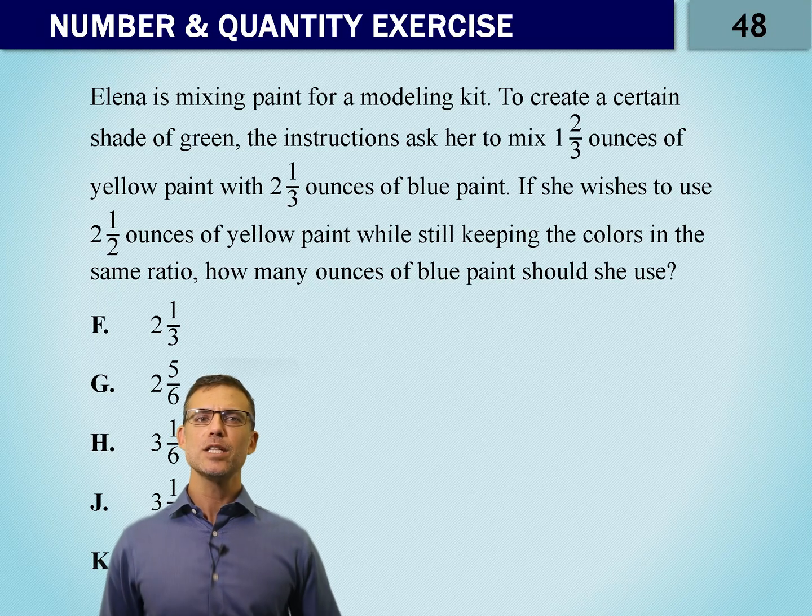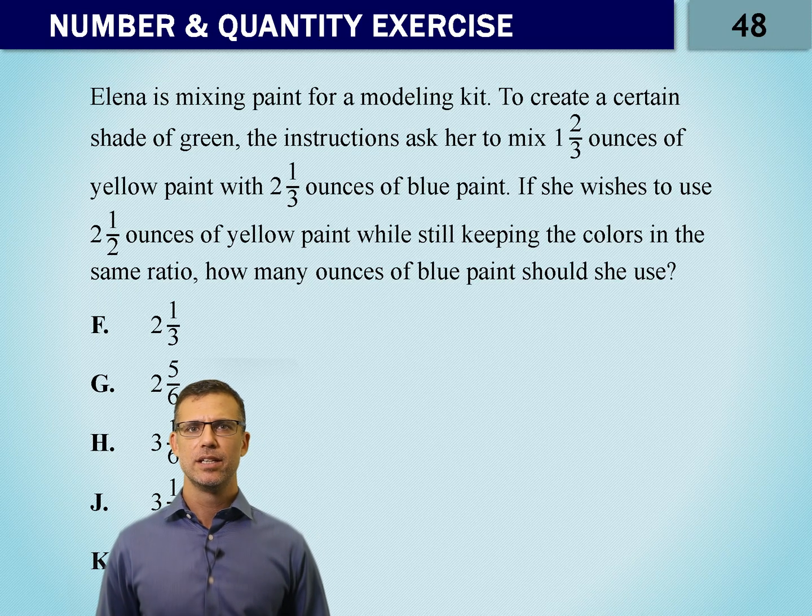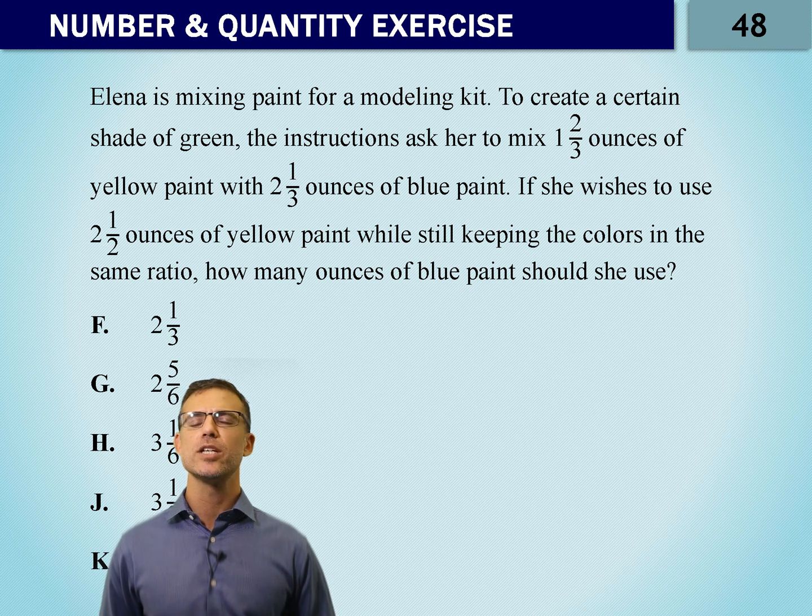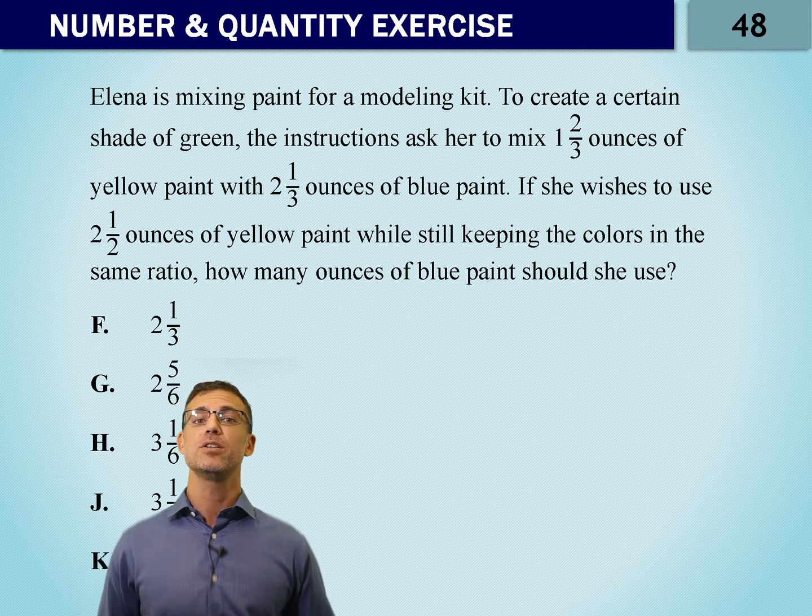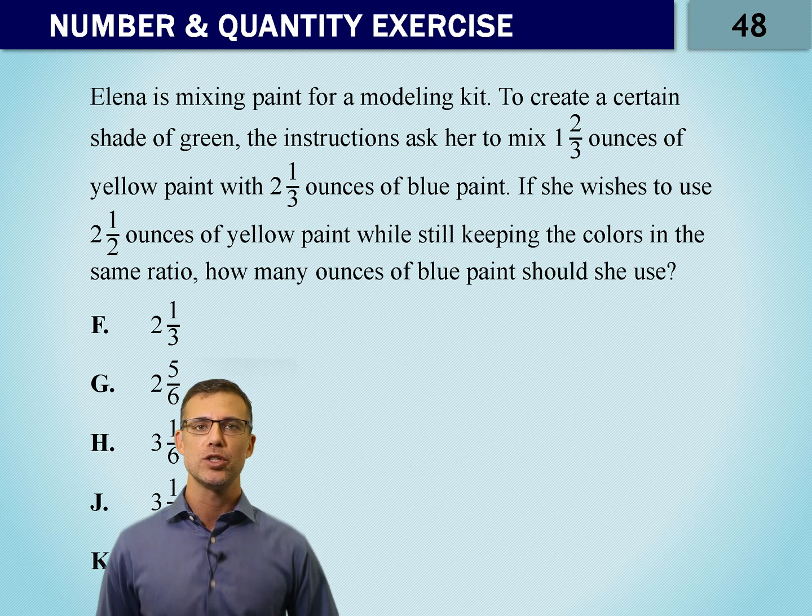Number 48. Elena is mixing paint for a modeling kit. To create a certain shade of green, the instructions ask her to mix one and two-thirds ounces of yellow paint with two and one-third ounces of blue paint. If she wishes to use two and a half ounces of yellow paint while still keeping the colors in the same ratio, how many ounces of blue paint should she use?